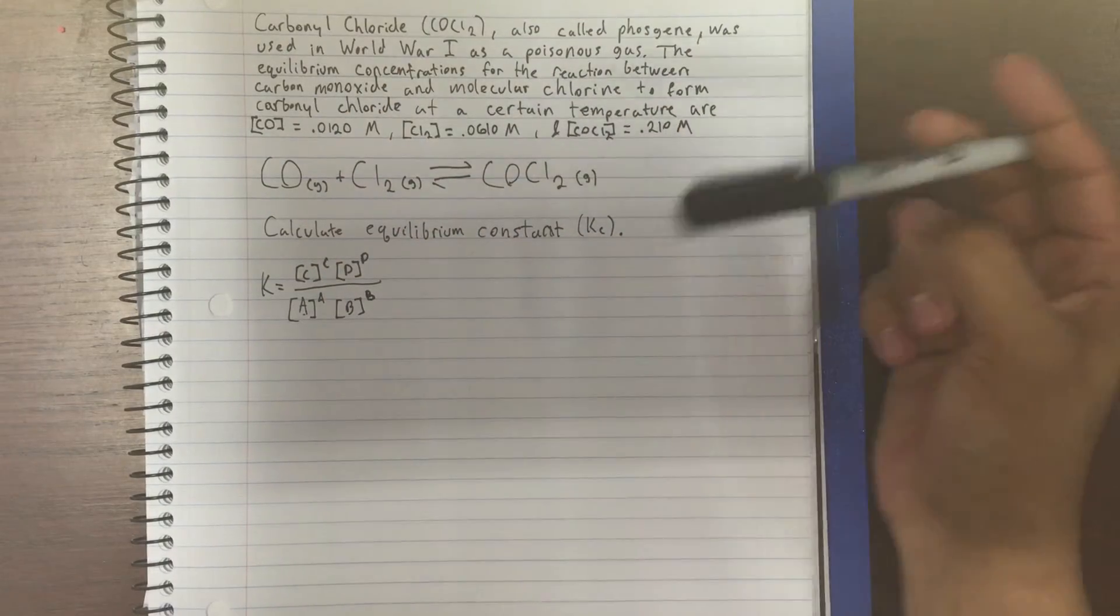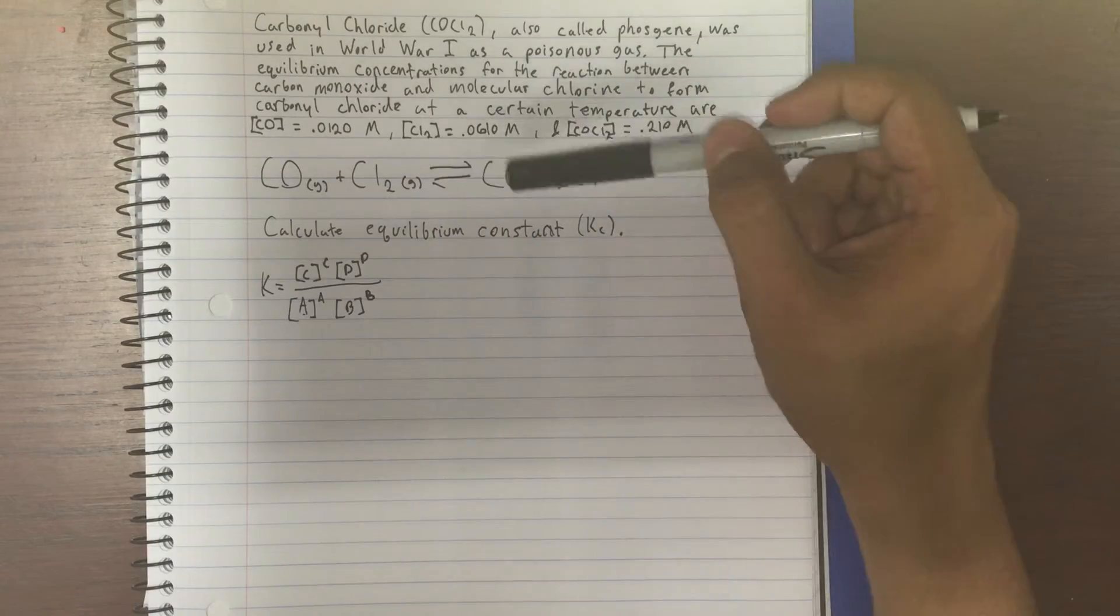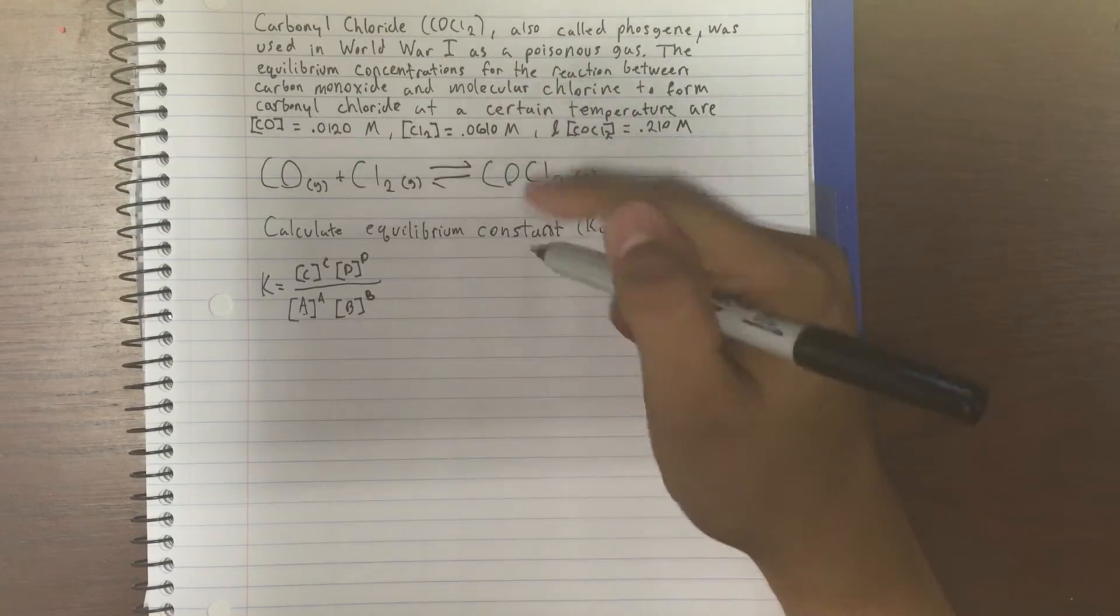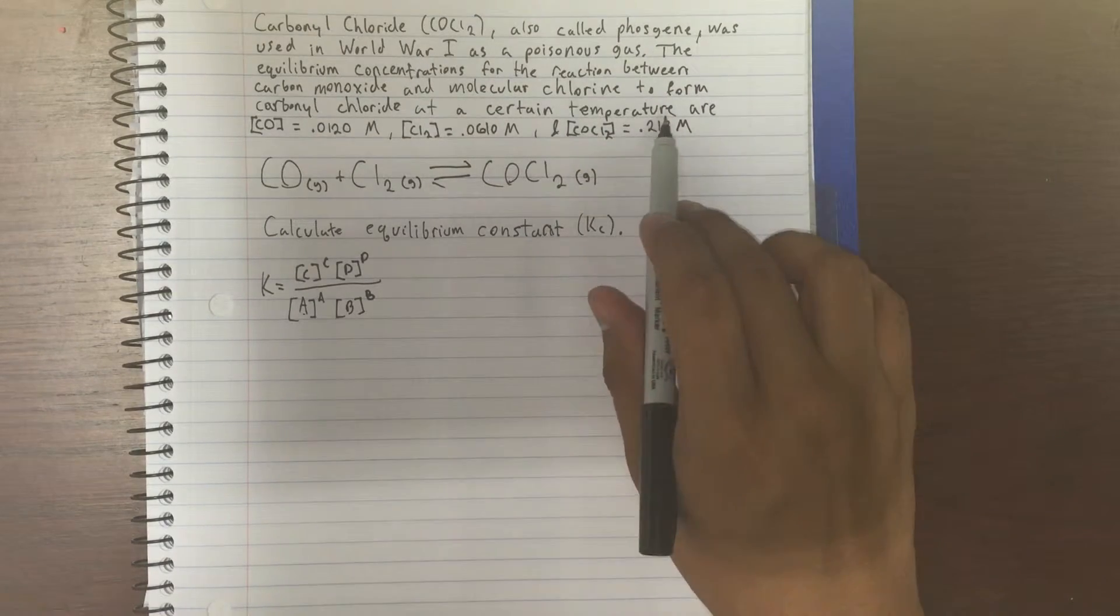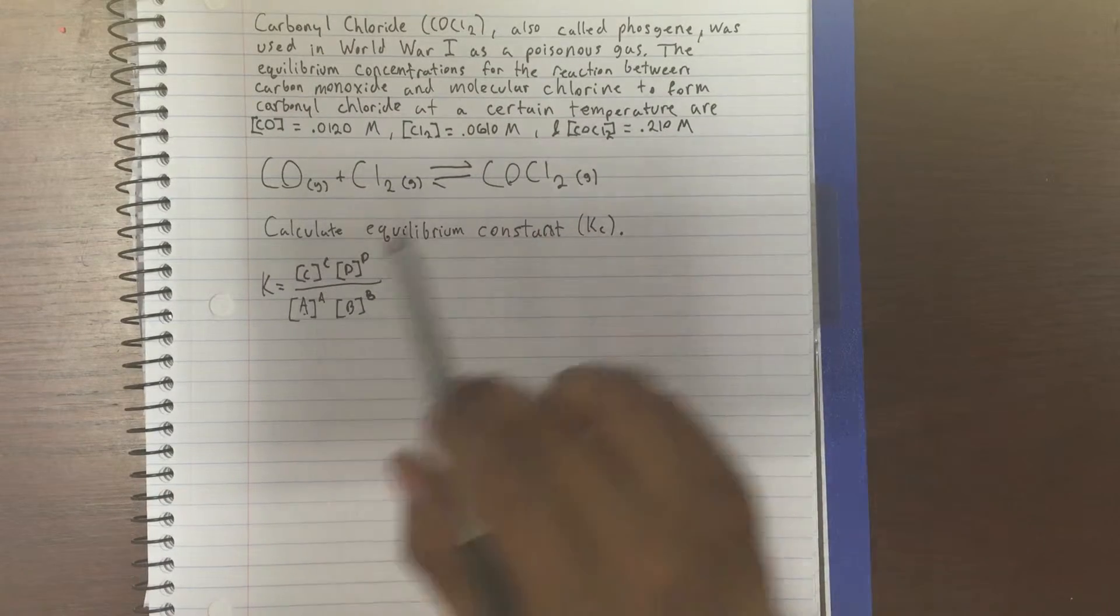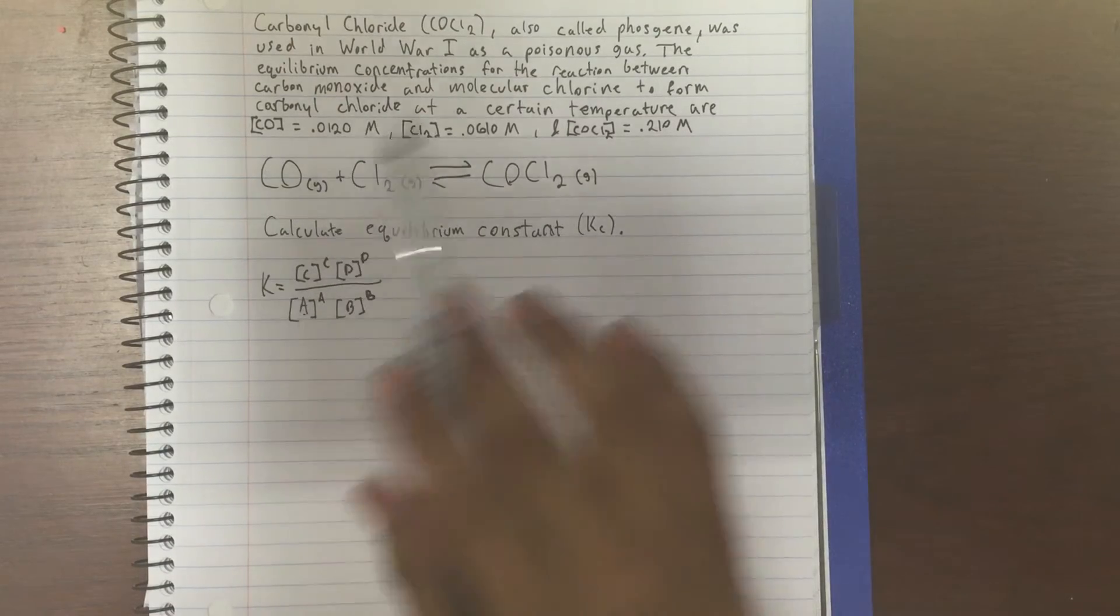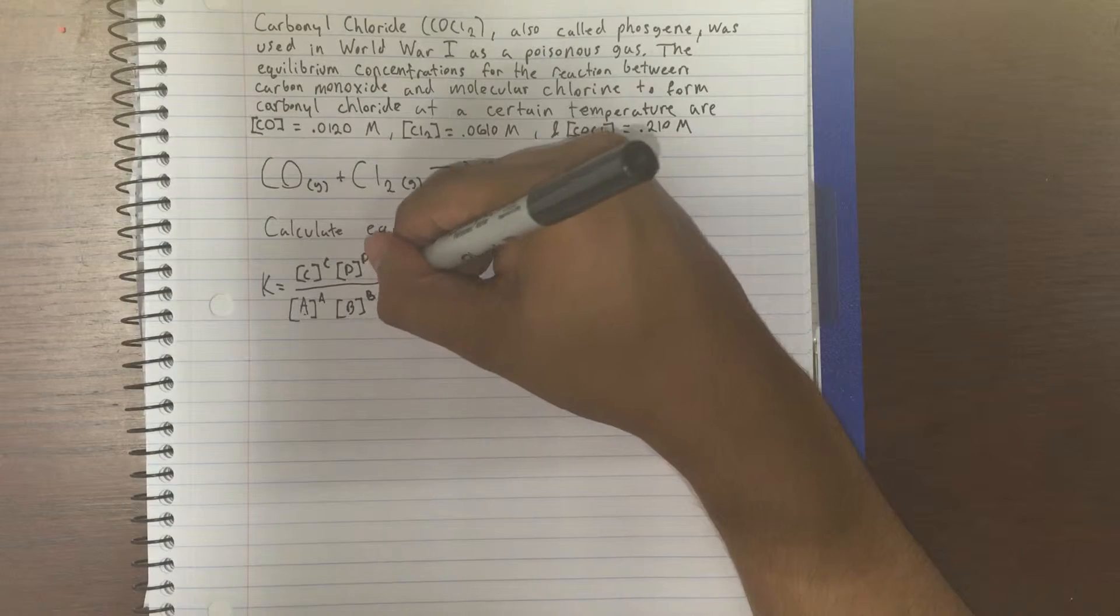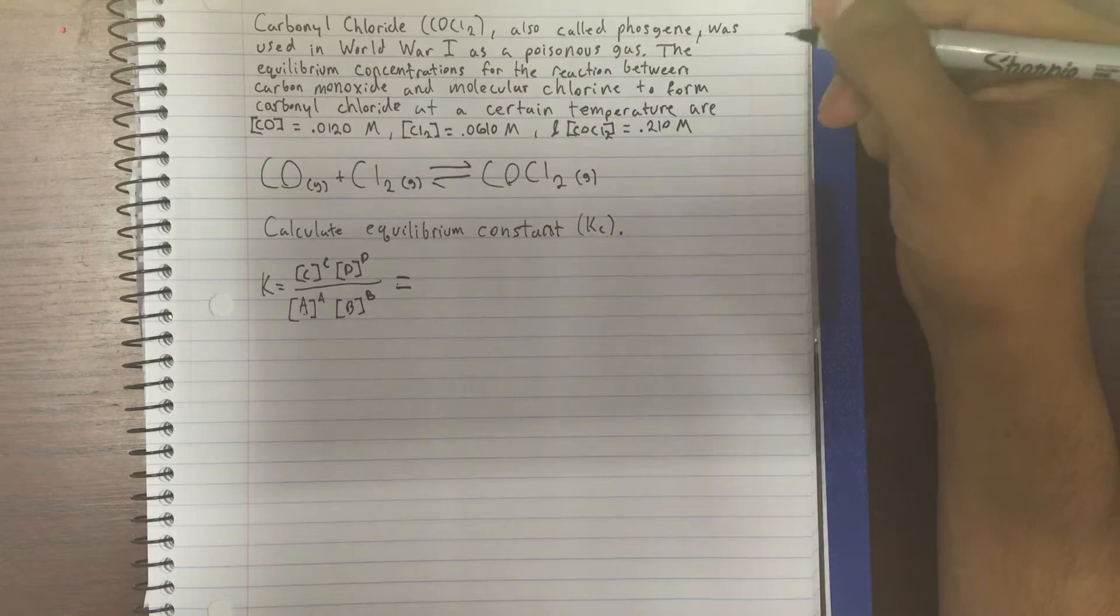Now what this means is you're going to get a concentration—say you have CO—because it's going to be product over reactant. So CO goes on the bottom here, and if CO had a coefficient in front of it, you'd raise it to that exponent. So if you had 2 CO, you'd put the CO concentration here and raise it to the second power. Since there's no coefficients here, we don't need to raise it to any powers, so let's just go ahead and plug it in.